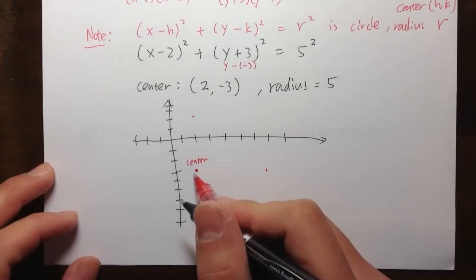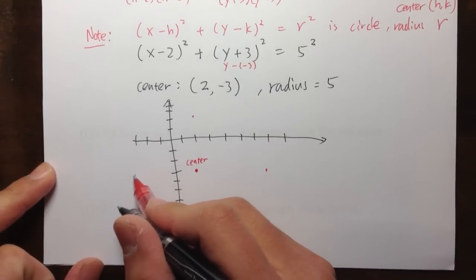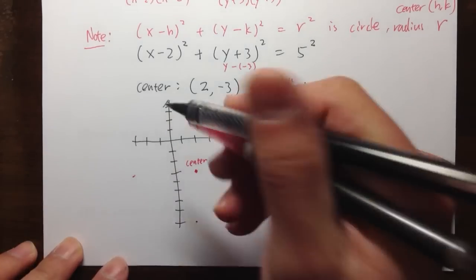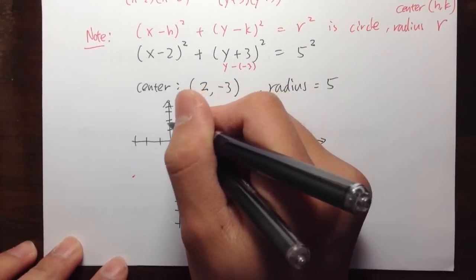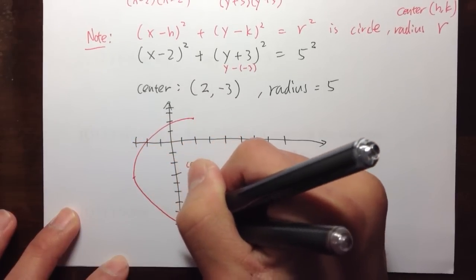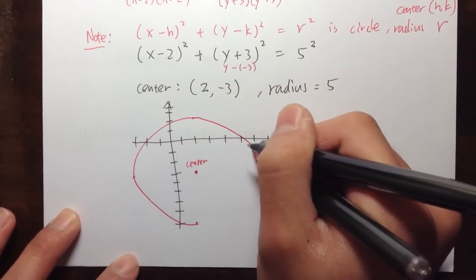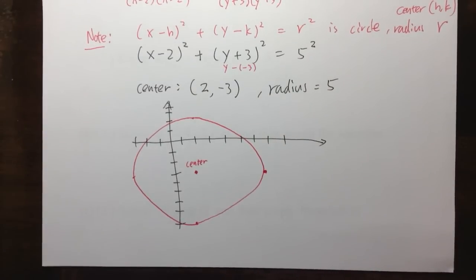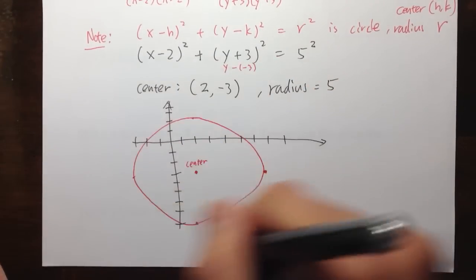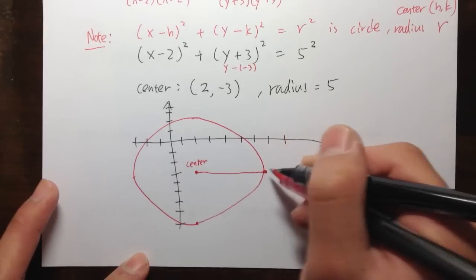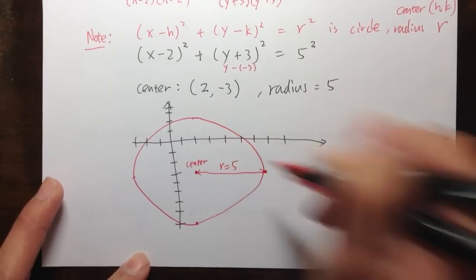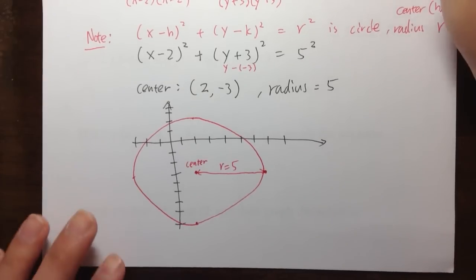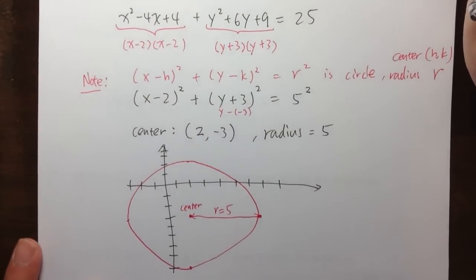Lastly, go to the left 5 units. For these four points, connect them with a circle — just draw a nice circle. Make sure you indicate that this distance, the radius, is equal to 5. That should be a good, correct answer, and you should be able to get full credit on this question.